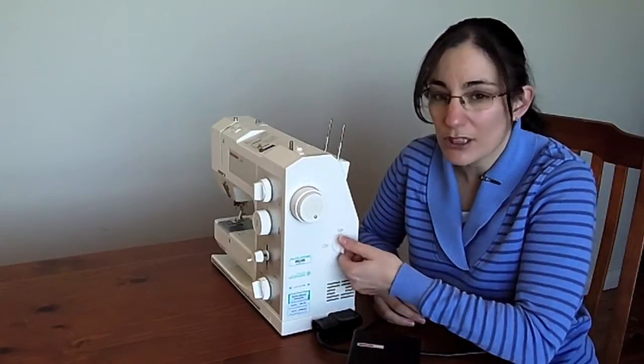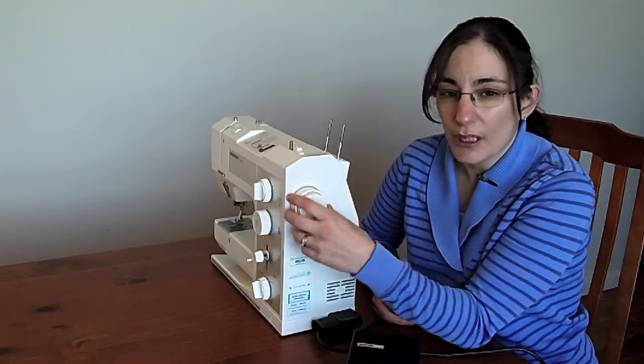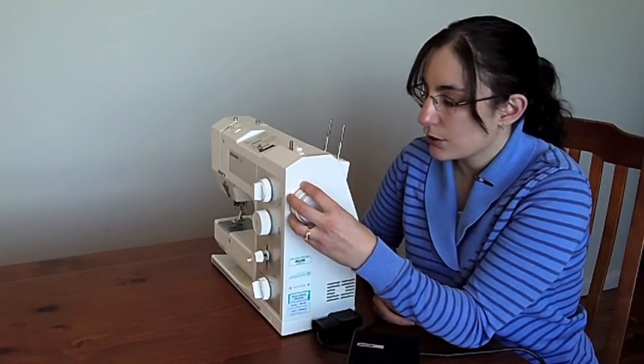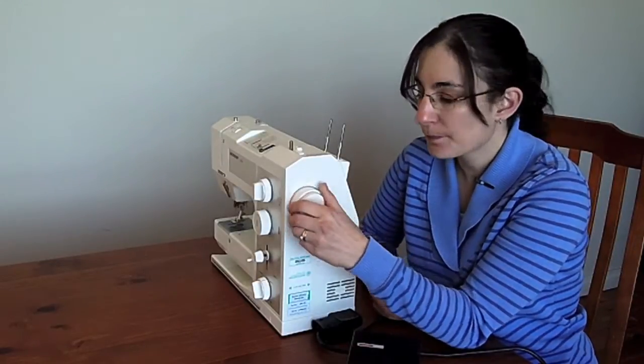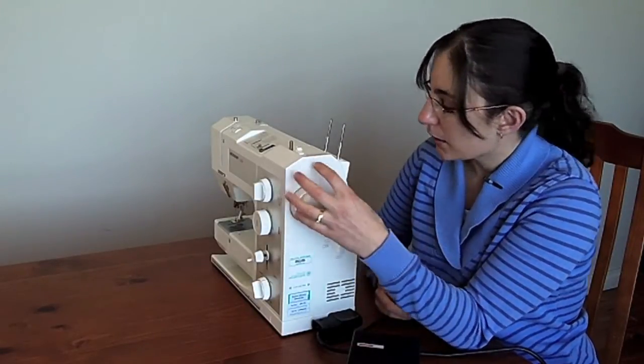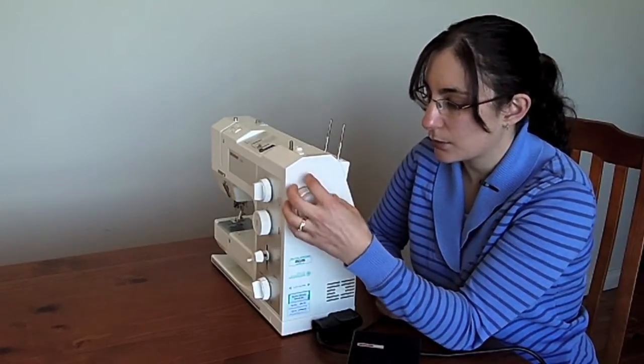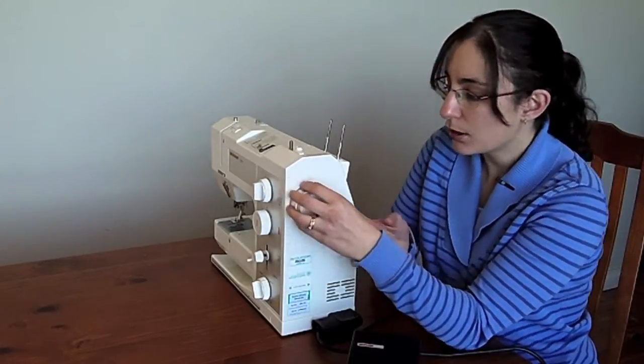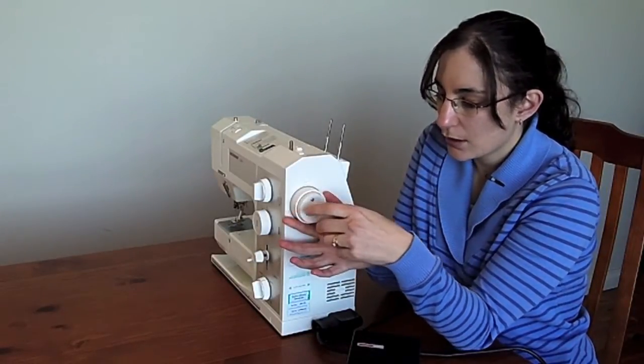You have your on-off switch here, and at the top here you have a hand wheel. Your hand wheel lets you manually make your needle go up and down, and there'll also be another feature on some machines where you either pull out your hand wheel or on this machine there's a dial that you turn.